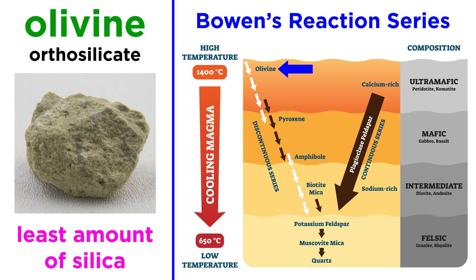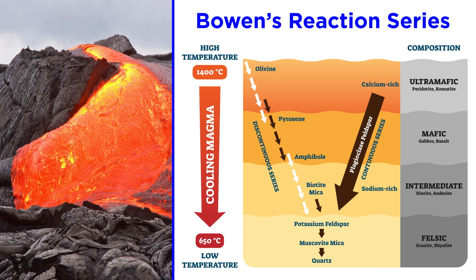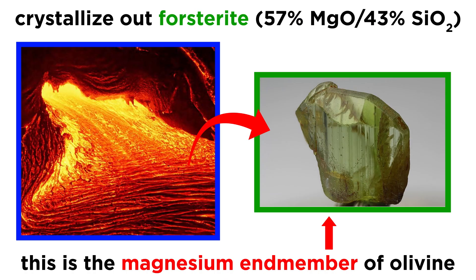We may recall that the first mineral to crystallize, olivine — an orthosilicate — has the smallest amount of silica of all the silicate minerals, while the last group contains potassium feldspar and quartz, which are framework silicates, the minerals with the most silica. This has important implications for the composition of a cooling melt. Let's consider an average basalt, having 50% SiO2, 15% Al2O3, 20% MgO, 10% CaO, and 5% alkalis. Now let's start to crystallize out forsterite, the magnesium endmember of olivine, which is composed of 57% MgO and 43% SiO2.